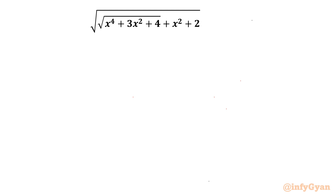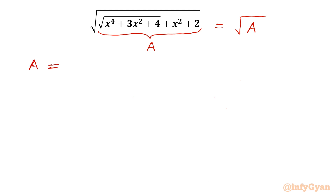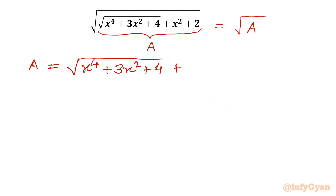I will begin by considering this radicand term as capital A. So ultimately we have to simplify or resolve this A which is inside the square root. A is equal to square root of x to the power 4 plus 3x squared plus 4, and then plus x squared plus 2.